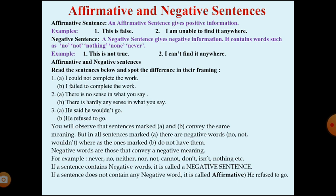You will observe that these sentences marked A and B convey the same meaning, but in all sentences marked A there are negative words — no, not, wouldn't — whereas the sentences marked B do not have them.